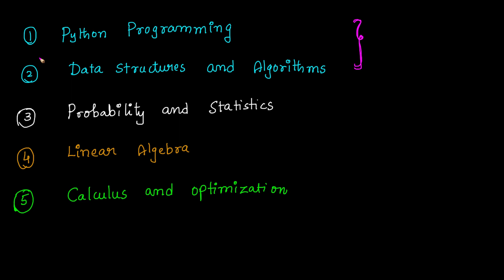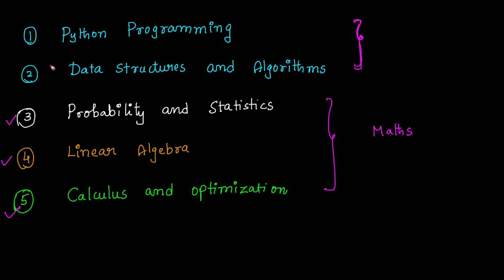Then you should focus on the subject called Maths. Under Math, you should start with Probability and Statistics, then Linear Algebra, then Calculus and Optimization. These are the subjects you might have seen in the GATE CS paper as well. That's why I recommend you to focus on these five subjects for this paper as well.